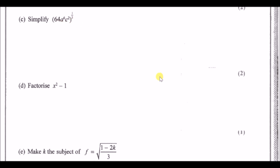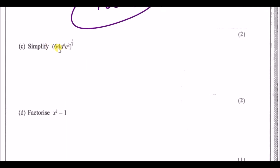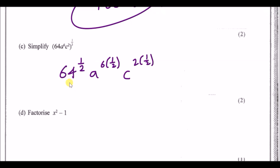Simplify all of these to the power of a half. When you have everything to a power you distribute that power to all the terms: 64 to the power of a half, a⁶ with a half next to it, and c² with a half next to it. 64 to the half is 8 (the square root). 6 times a half is 3, so a to the power 3. 2 times a half is 1, so just c.